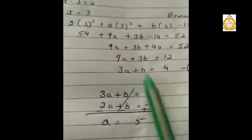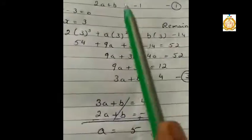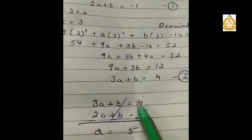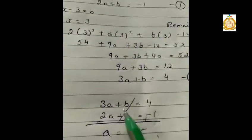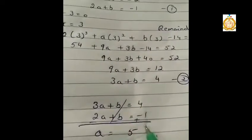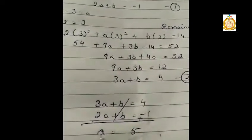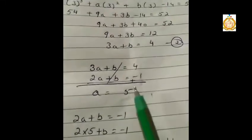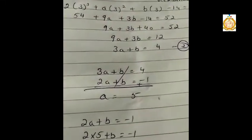Now I have to find the values of a and b. I can use any substitution method — we have already done these methods. I subtract the first equation from the second. Then b will be cancelled because the sign changes, and a becomes 5. Now I put this value of a into one of the equations and find the value of b. The answer is a equals 5 and b equals minus 11.